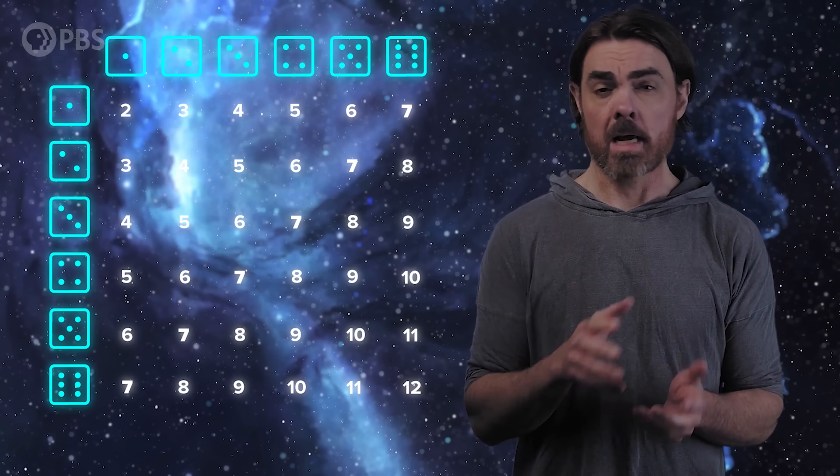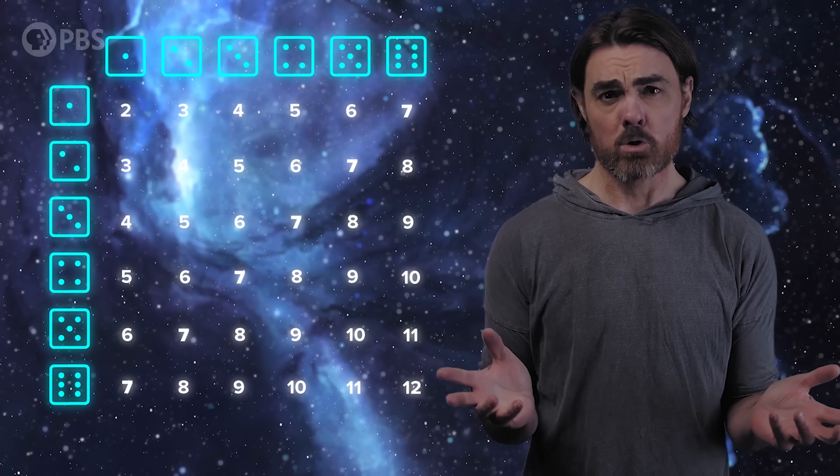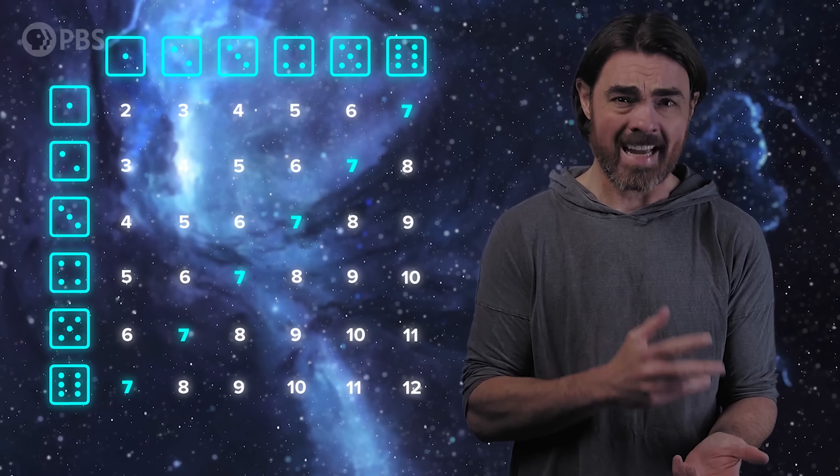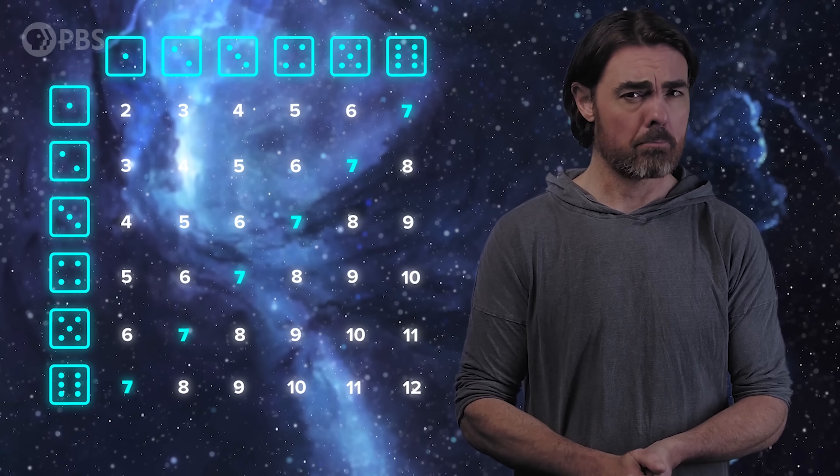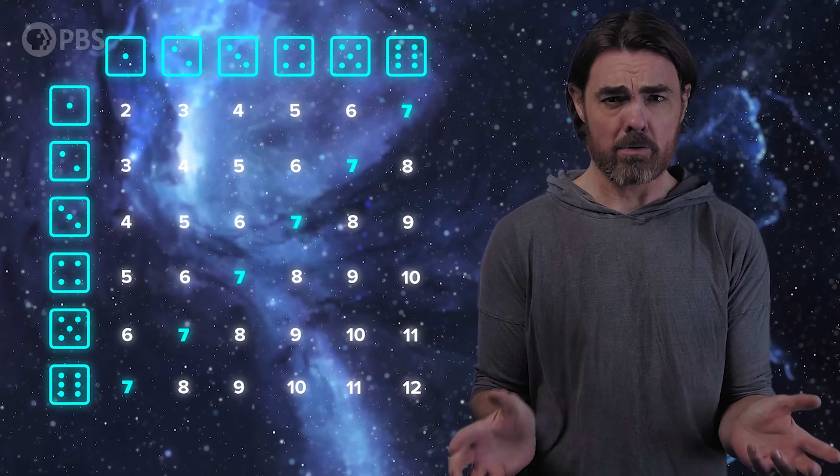Let's say I roll a pair of dice and you get to bet on what number comes up. What do you choose? Well, the smart choice is seven, because there are more ways for two dice to come up seven than any other number. It turns out that you can apply the same logic to predicting the behavior of the universe. Let's see how some of our most powerful tools in physics are really a game of cosmic craps.